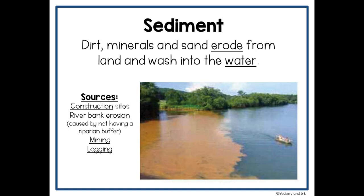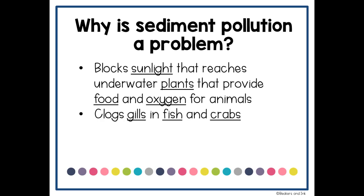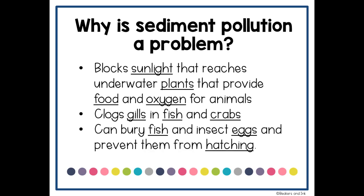Sediment pollution may not seem like a big problem, but there are several issues. First, it blocks the sunlight that reaches underwater plants, which provide food and oxygen for animals. Sediments can also get stuck in the gills of fish and crabs and clog them. Additionally, sediment can bury fish and insects' eggs and prevent them from hatching.